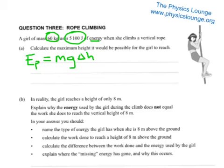We know the energy is 5100 joules, we know the mass of the girl is 60 kilograms, and the gravitational constant in this case, acceleration due to gravity, or the newtons per kilogram, the force per mass, is 10.